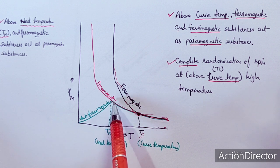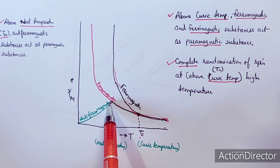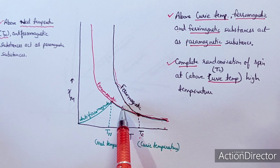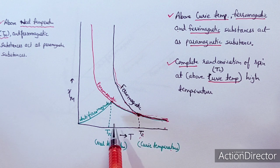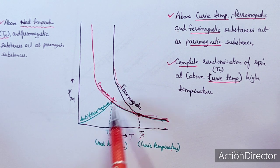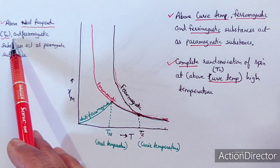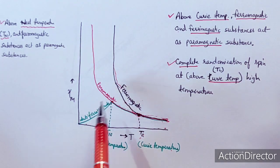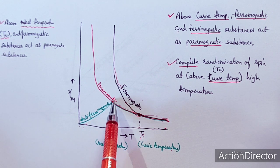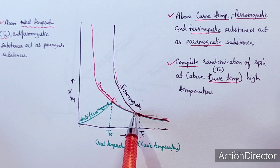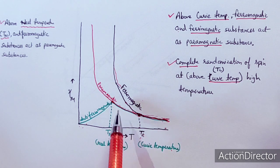For antiferromagnetic material, up to the Néel temperature TN the magnetic susceptibility increases with temperature, and after TN its susceptibility decreases and the curve merges with the paramagnetic curve. So below TN it is antiferromagnetic, but above TN it behaves as a paramagnetic substance due to complete randomization of spins at higher temperature.